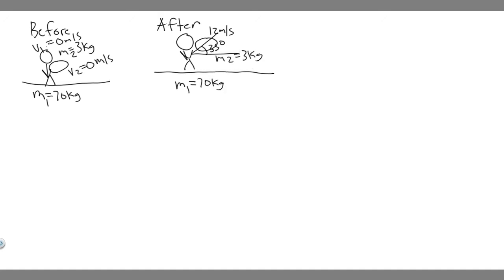When they throw the rock, it's going to cause them to travel backwards — there's going to be some velocity of this person, and that's what they want us to find: what is our speed after throwing the rock? We can call this V1 final, because V1 is our speed in the beginning and V1 final is the speed after.